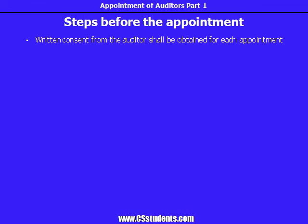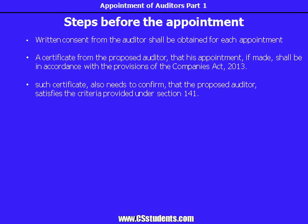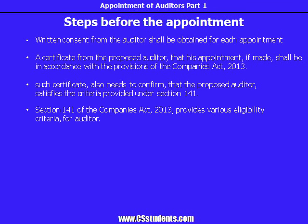The second requirement is a certificate from the proposed auditor that his appointment, if made, shall be in accordance with the provisions of the Companies Act. Such certificate also needs to confirm that the proposed auditor satisfies the criteria provided under Section 141. Section 141 of the Companies Act 2013 provides various eligibility criteria for auditor. In a separate presentation, we would discuss those eligibility criteria.